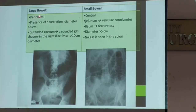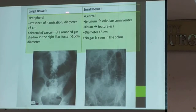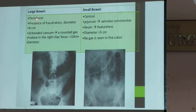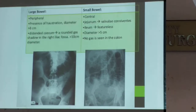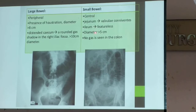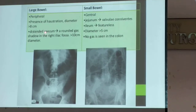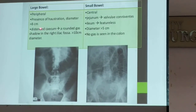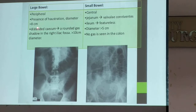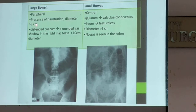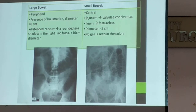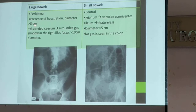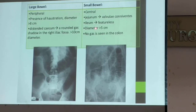The point of comparison: location — large bowel is peripheral, small bowel is central. The diameter for large bowel is normally more than 5 cm, and more than 8 cm in obstruction; for small bowel, normally 3 cm.